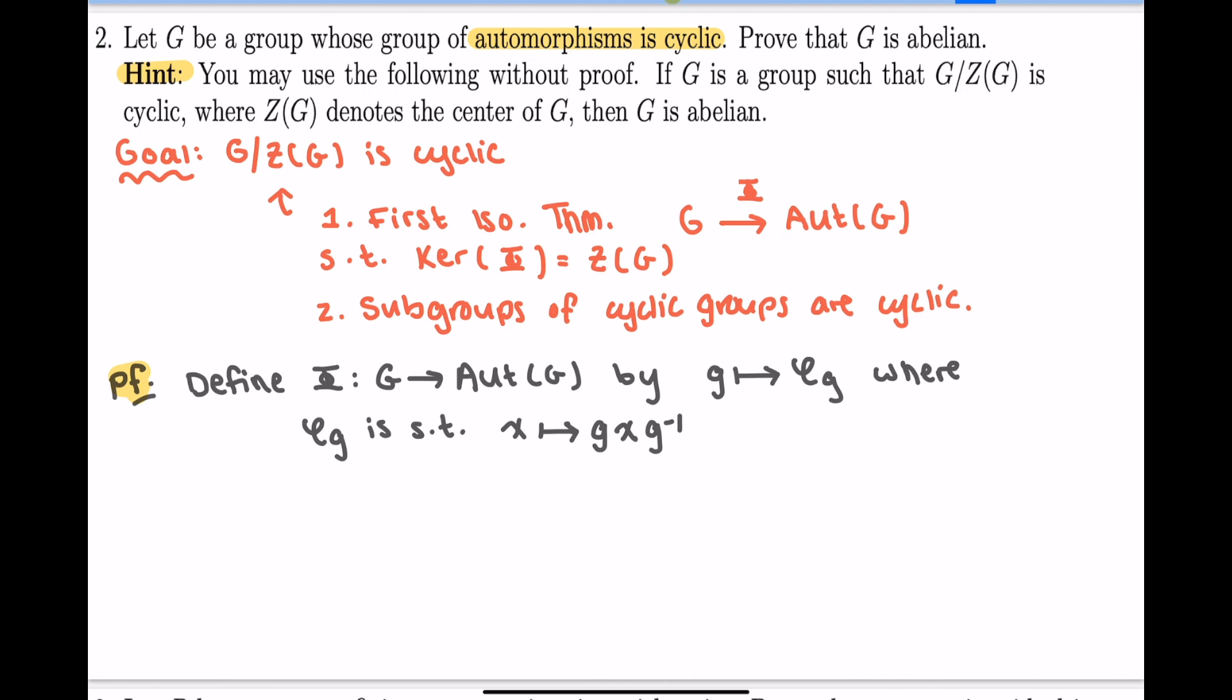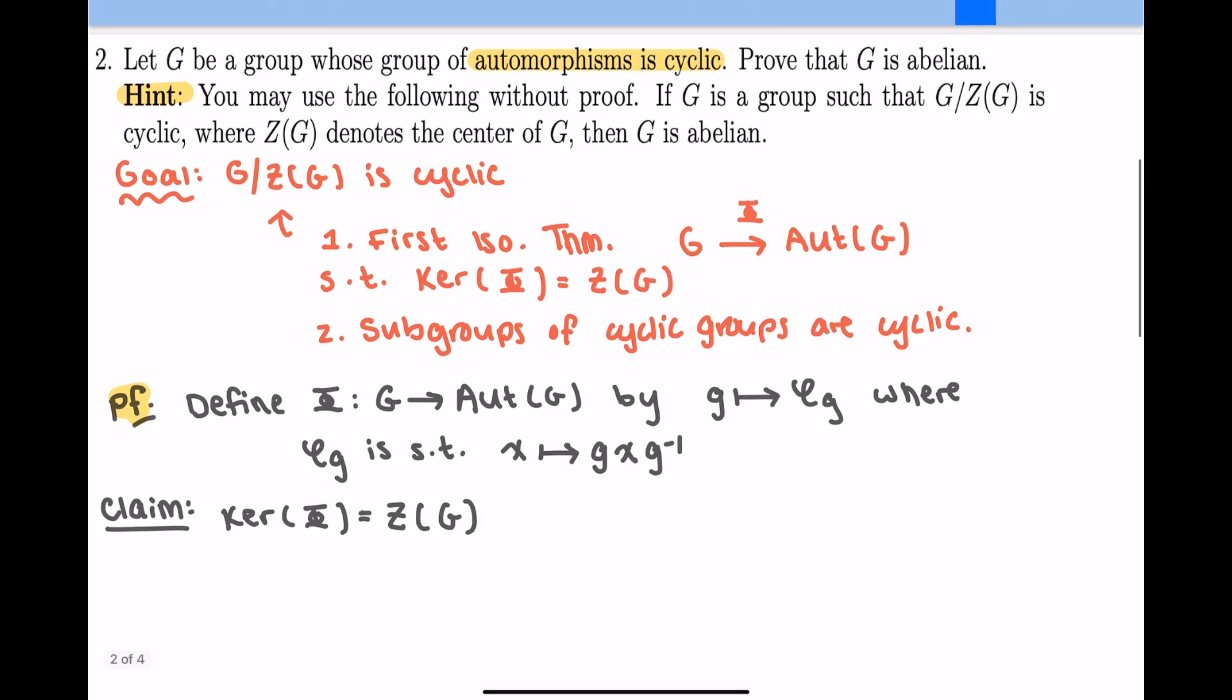Now, first isomorphism theorem tells me that if I take G mod out by the kernel of capital phi, it's isomorphic to a subgroup of the automorphism group. I'm going after G mod its center, so my hope is that the kernel of this map is the center of G. Why did I pick this map? Because if I'm dealing with central elements, then I can commute things in a way that looks nice. So here's my claim: the kernel of capital phi is equal to the center of G.